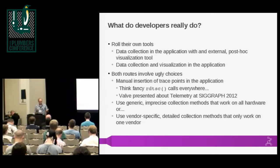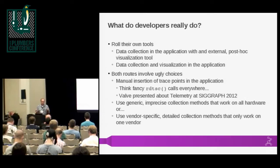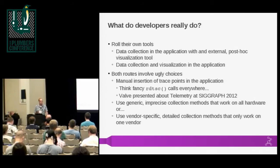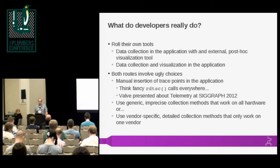They also have to pick between using generic imprecise collection methods — like using ARB timestamp query to get timing information that will work across multiple vendors — or using vendor-specific APIs to get more detailed, precise data. But then they're stuck just being able to collect data on that particular vendor's hardware.